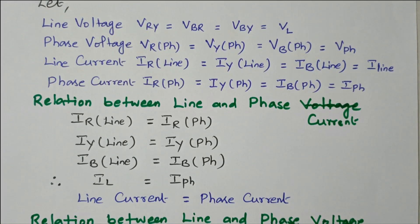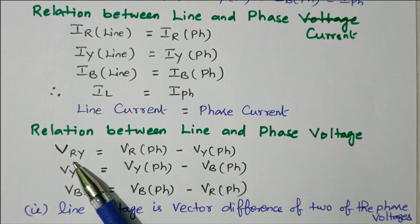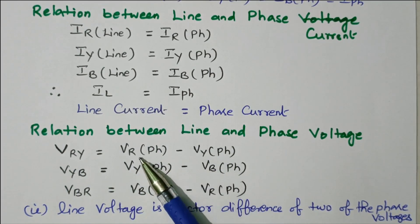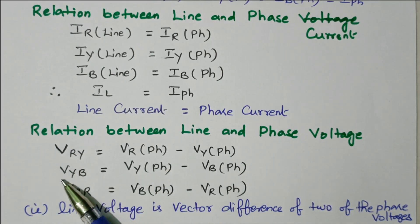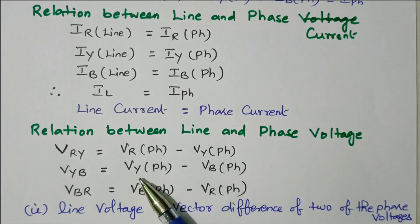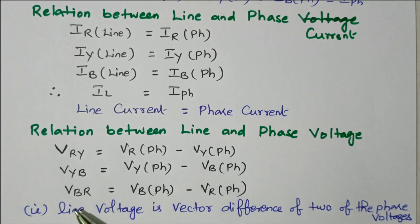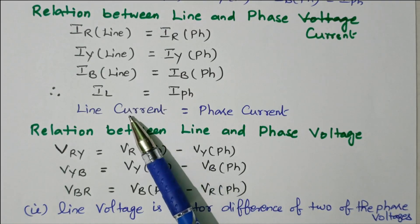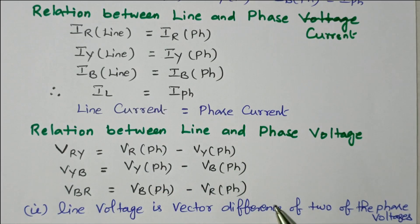Now we will see the line and phase voltage relationship. The voltage V_RY equals V_R_phase minus V_Y_phase — the vector difference of R phase and Y phase. Similarly, V_YB is the line voltage equal to V_Y_phase minus V_B_phase, because currents are opposite giving a negative sign. V_BR equals V_B_phase minus V_R_phase. So generally, line voltage is the vector difference of two phase voltages, while line current equals phase current. With this relation, we can go to the phasor diagram.